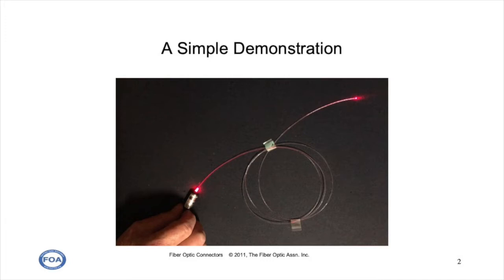Note how you can see the light entering and leaving the fiber at either end, but you don't see much light leaving the fiber in the coils of fiber in the center. That's because the fiber is designed to trap the light in the core of the fiber so it can be transmitted over long distances.